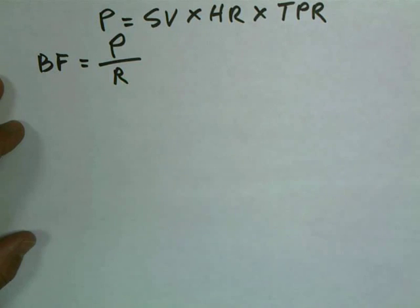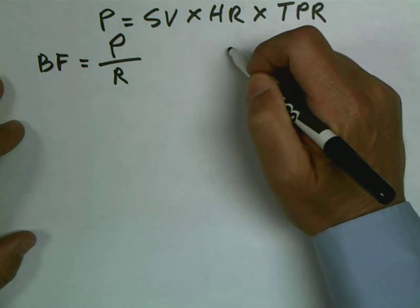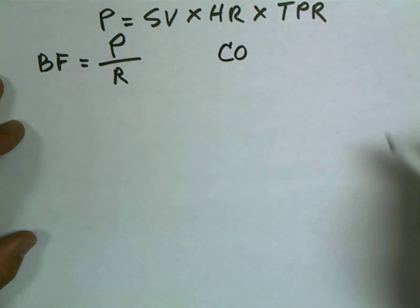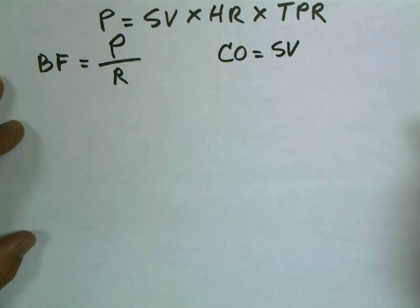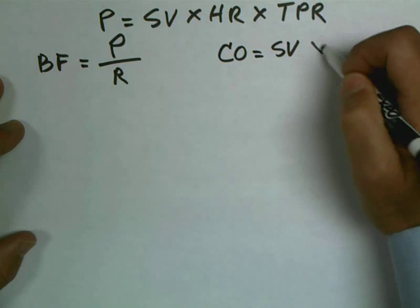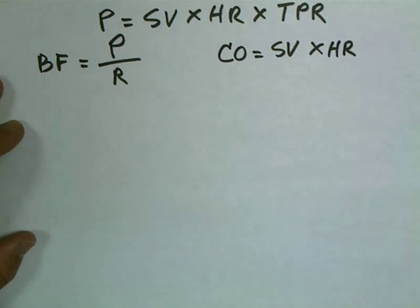The other equation, which is pretty intuitive, I think, is that we also know that the flow out of the heart, which we call cardiac output, is equal to the stroke volume, which is the amount of blood that's pumped out of the heart every time it beats, times the heart rate. So I think that's pretty easy to understand.